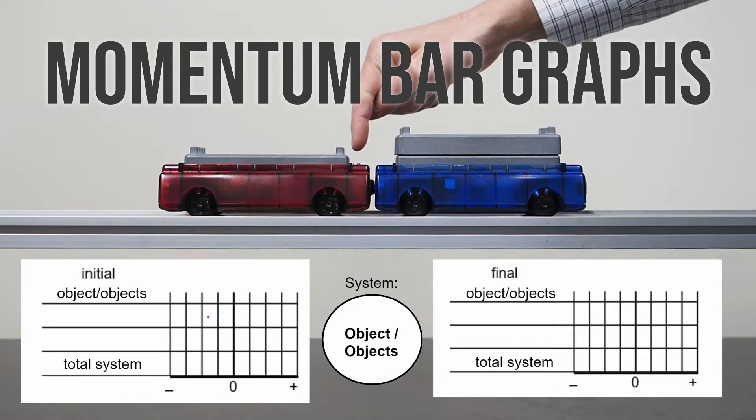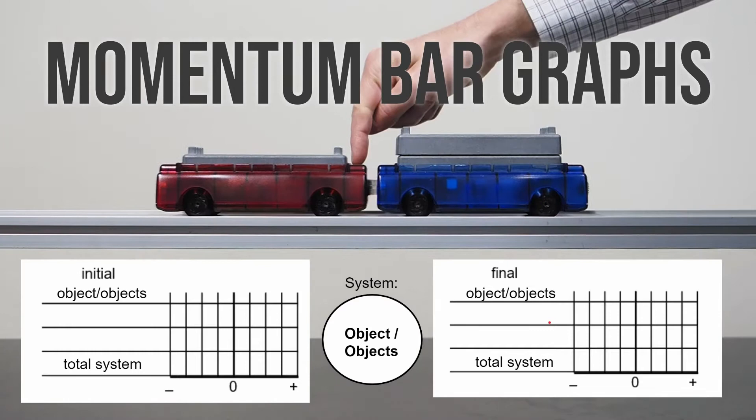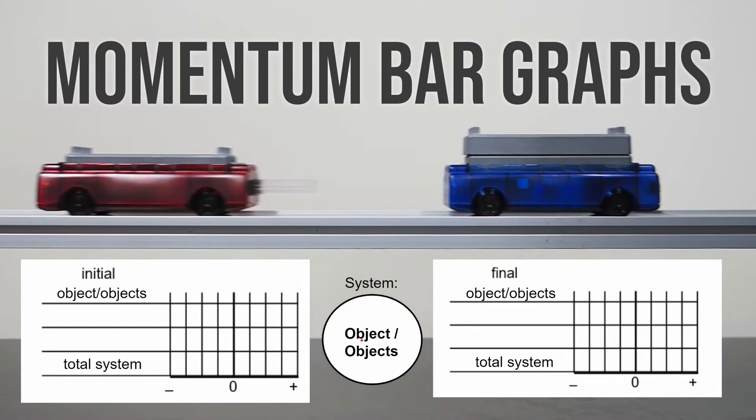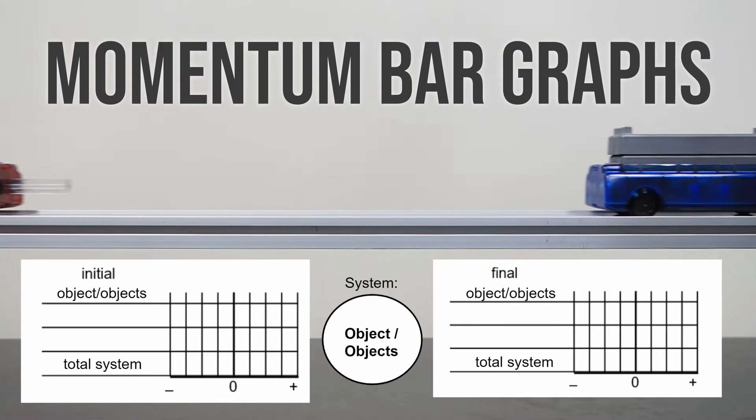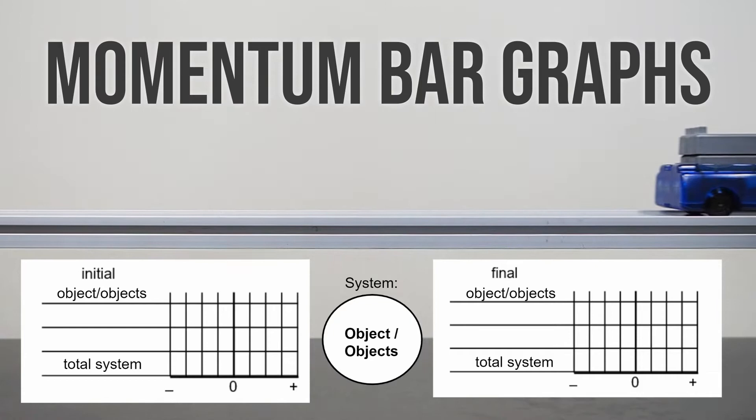We're going to use a bar graph on the left-hand side to represent where the momentum is stored by the system — the object or objects within the system. The bar graph on the right will represent where the momentum is stored in the end, and the thing in the middle is going to represent our system. Now, just like with energy situations, how we define the system matters and that's also the case for momentum bar graphs.